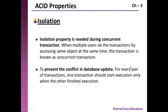The isolation property is needed during concurrent transactions. When multiple users do transactions by accessing the same object at the same time, these are known as concurrent transactions. To prevent conflict in database updates, for every pair of transactions, one transaction should start execution only when the other has finished execution.